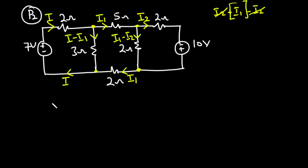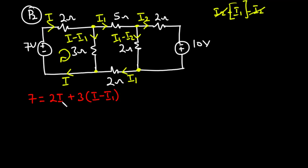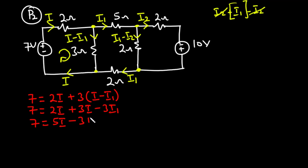Considering the first loop: the voltage source is 7 volts, equal to the sum of the voltage drops. Moving clockwise: 7 equals 2 times i, which is 2i, plus 3 times the quantity i minus i1. Expanding: 7 equals 2i plus 3i minus 3i1, giving 5i minus 3i1. Let's call this equation 1.